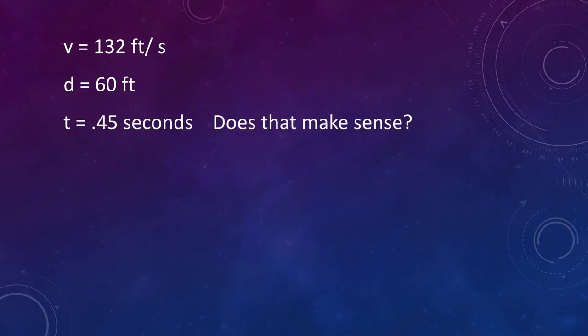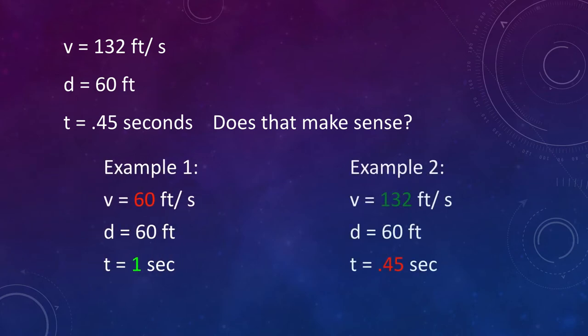Does that answer make sense? In the first example, the ball traveled 60 feet per second. In this example, it's a little more than double the speed. Since velocity and time are inversely proportional, a time of 0.45 seconds makes sense.